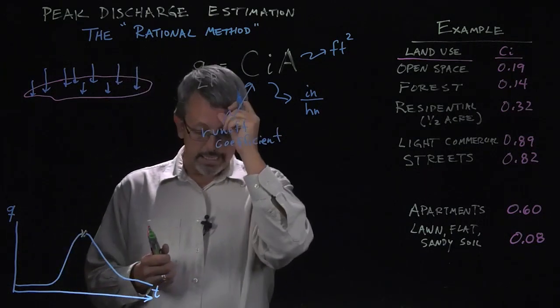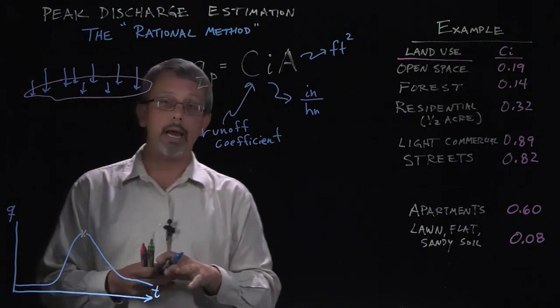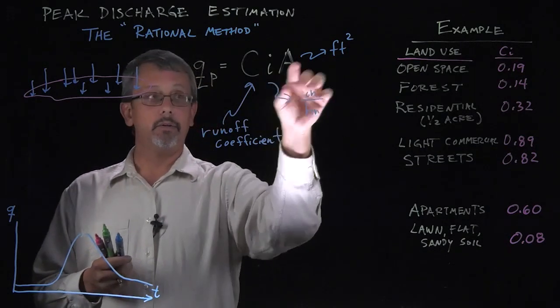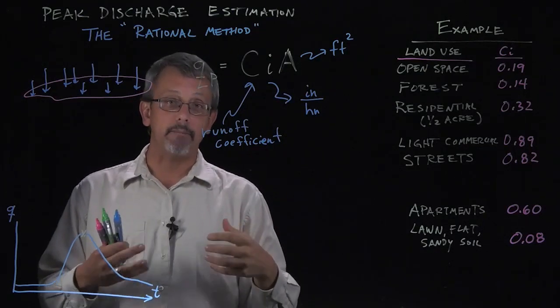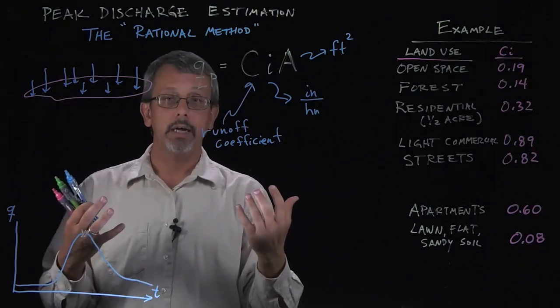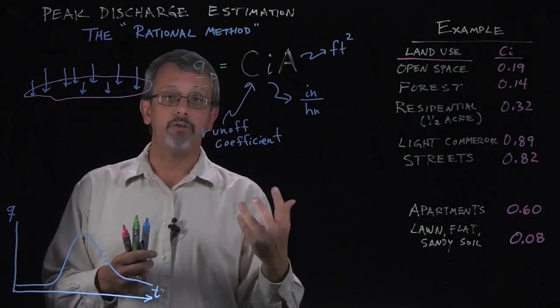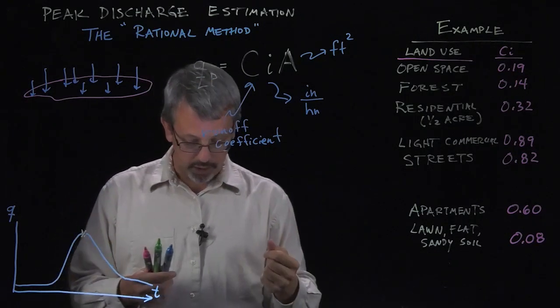The idea here is that we're simply thinking about the amount of rain, the volume of rain here represented by I*A, and we're going to multiply it by some fraction. We're going to assume only some fraction of it runs off. And that's effectively what this coefficient is going to represent is that fraction, what percentage of it's going to run off.